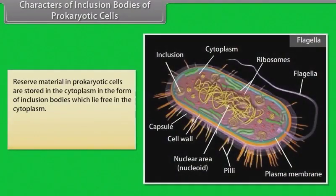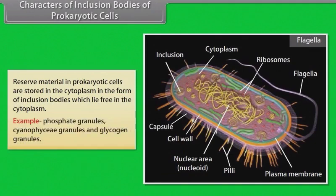Characters of inclusion bodies in prokaryotic cells: Reserve material in prokaryotic cells is stored in the cytoplasm in the form of inclusion bodies, which lie free in the cytoplasm. Examples include phosphate granules, cyanophycin granules, and glycogen granules.